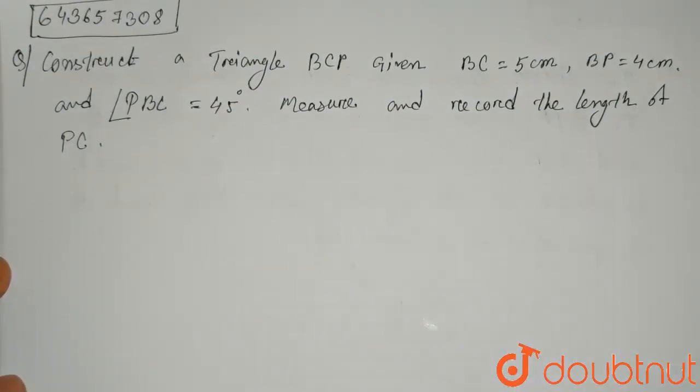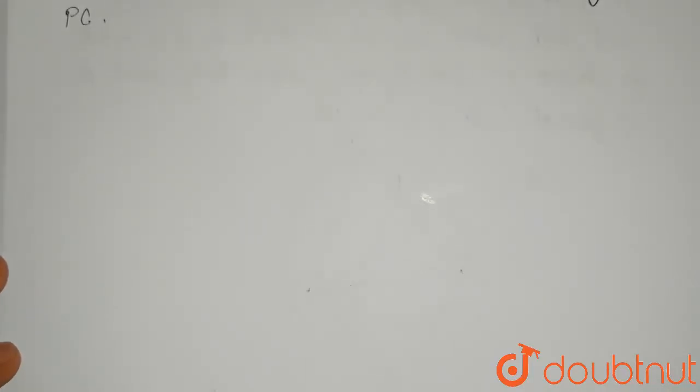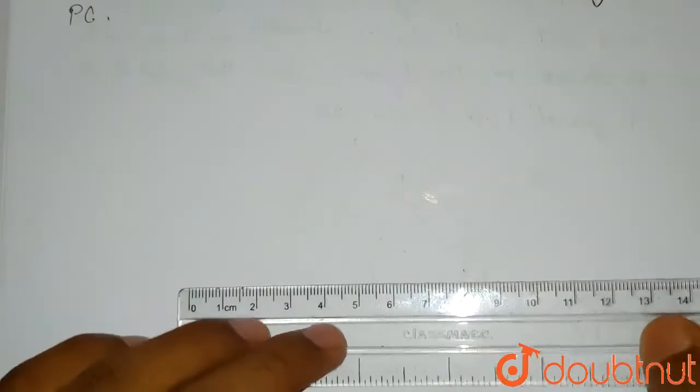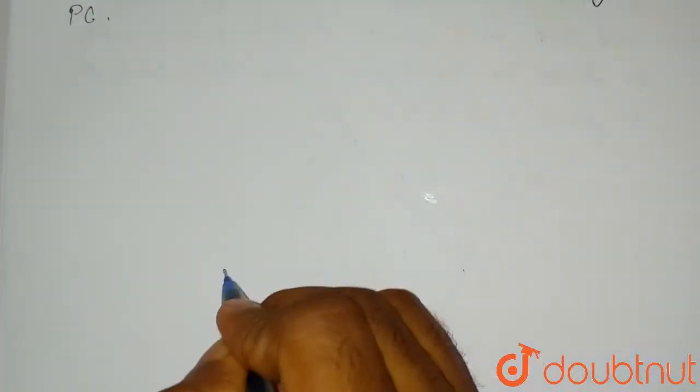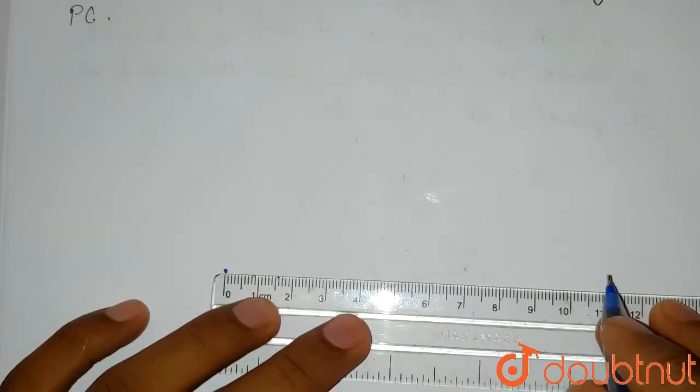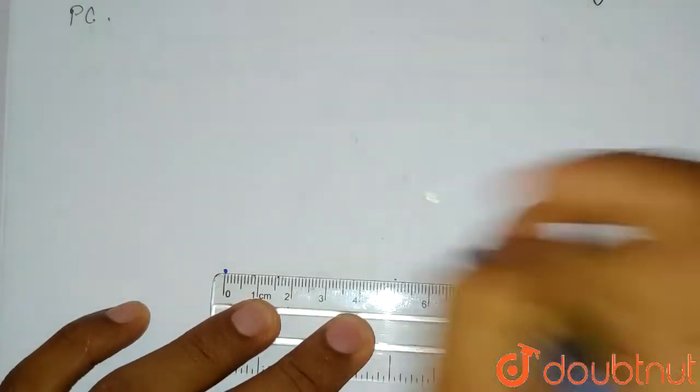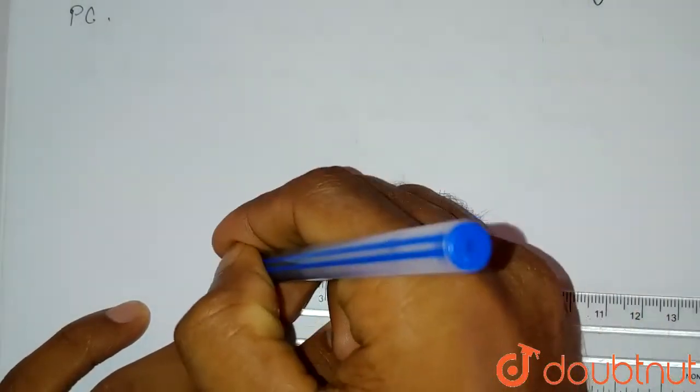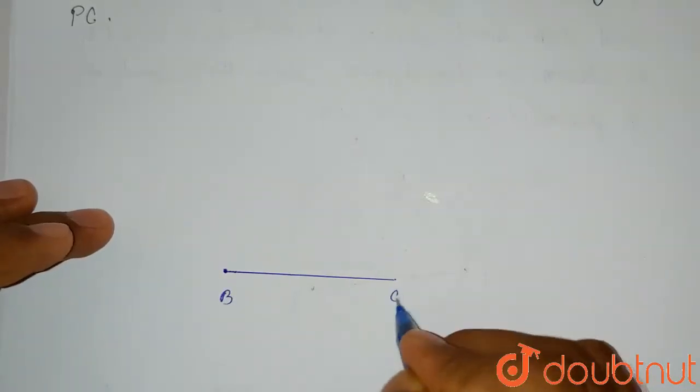So first of all we will take the scale and measure the side BC which is 5 cm. Let's say this point will be B. So from this point we have to measure the distance of 5 cm. So this is the 5 cm distance. If this is B, this point is C.